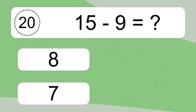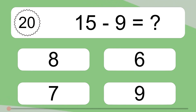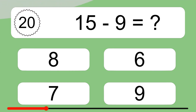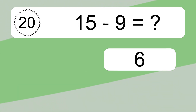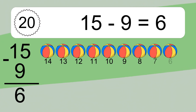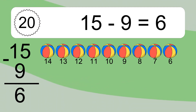15 minus 9 equals what? 15 minus 9 equals 6. Let's count it. 14, 13, 12, 11, 10, 9, 8, 7, 6.